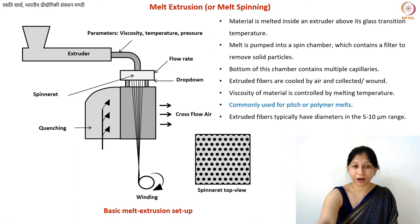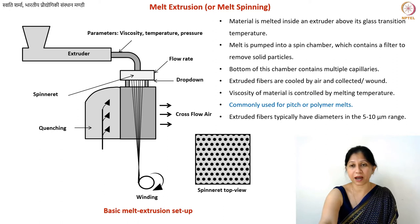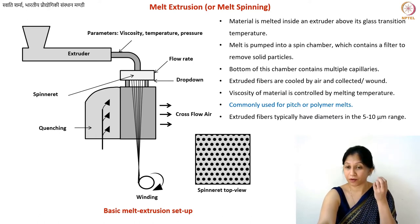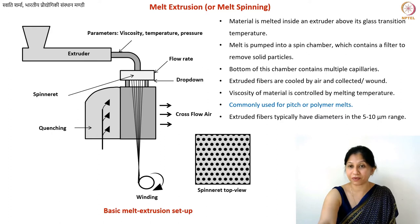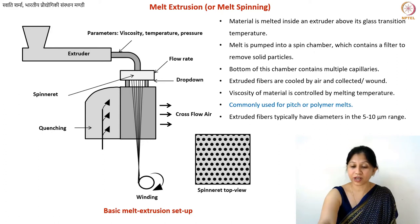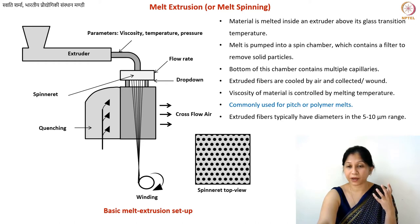Fibers fabricated using this melt spinning process will have diameters in the micrometer range — you will not get nanofibers this way. For very thin fibers, you need very small capillaries, but then the surface tension of the capillary becomes very important. With a viscous liquid and a very small capillary, it becomes very difficult to achieve thin diameters. Typically these fibers are in the 5 to 10 micrometer range.